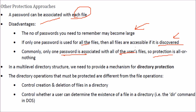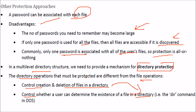When dealing with a multilevel directory structure, we need to provide a mechanism for directory protection. The directory operations that must be protected are different from file operations. In directory operations, we need to control the creation and deletion of files in a directory, and also control whether a user can determine the existence of a file in a directory — for example, using the DOS dir command.